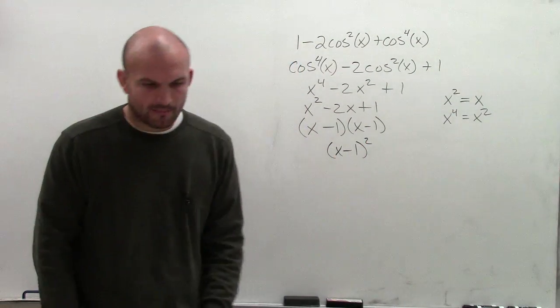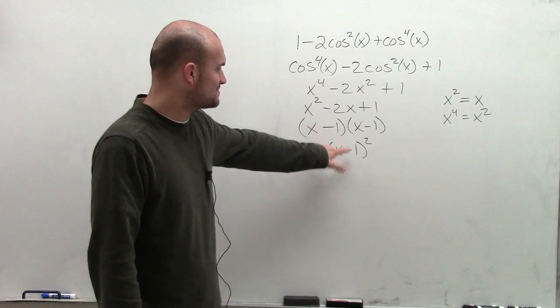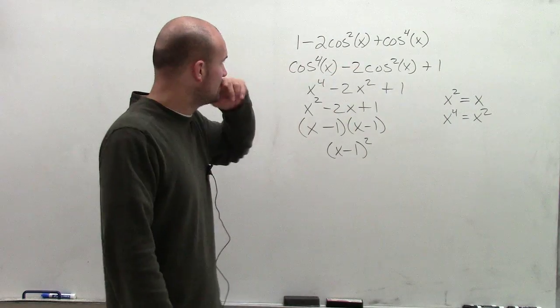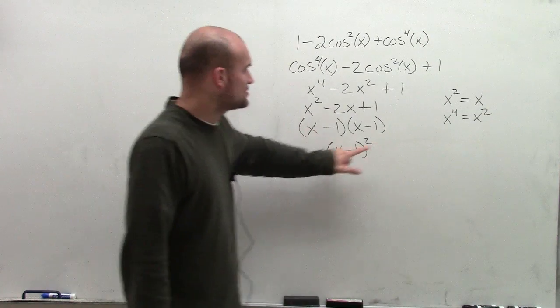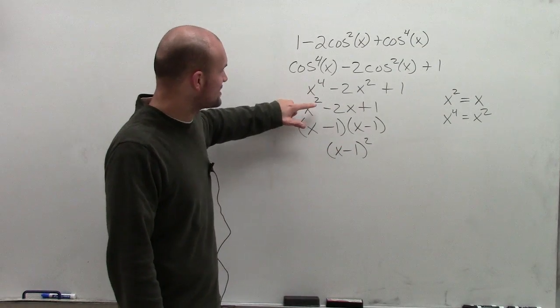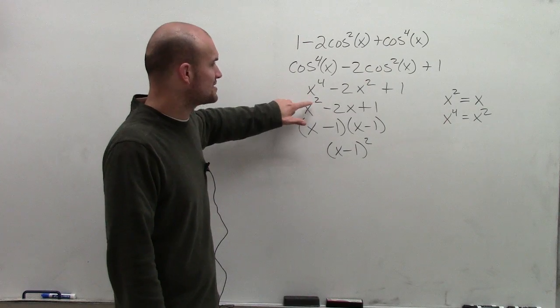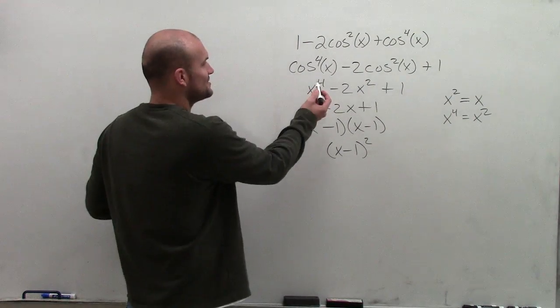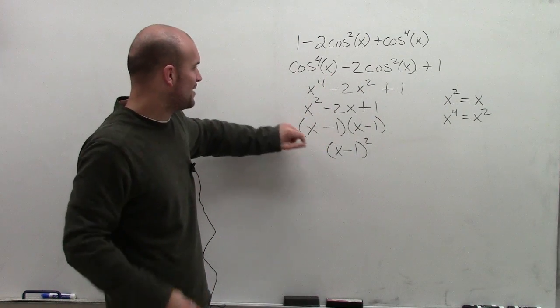But before we even get to that point, let's work back and say, I understand x minus 1 squared, but how is that going to apply back to this problem? Well, let's take a look. First of all, we changed our x. Our x is now equal to our x squareds, and our x squareds are really equal to our x to the fourths.